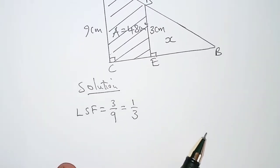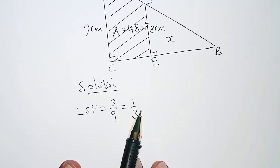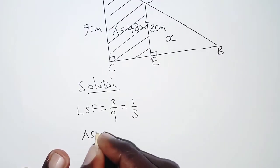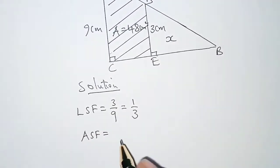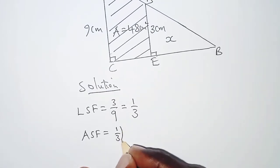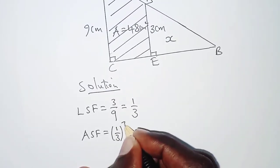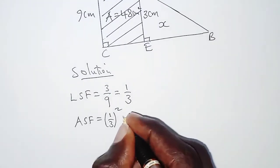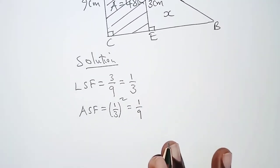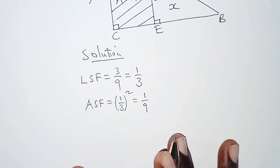We cannot use linear scale factor to get area, so we'll be required to get the area scale factor. The area scale factor is simply the square of the linear scale factor, so we'll have to take the linear scale factor and square that, which should give us 1 over 9. Now this will help us get the value of x.